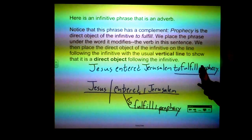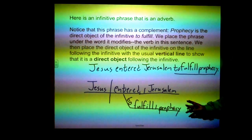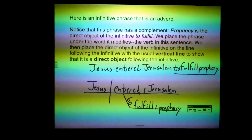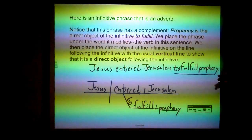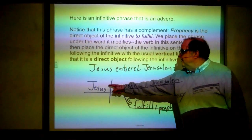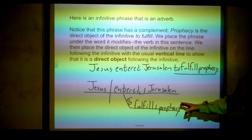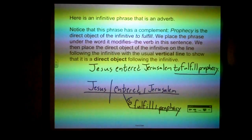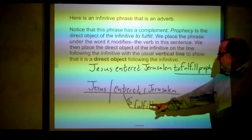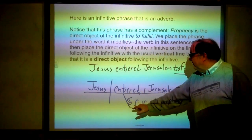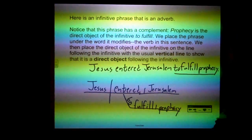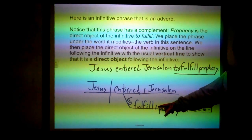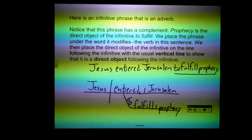Here's a trickier one — an adverb infinitive phrase: "Jesus entered Jerusalem to fulfill prophecy." "To fulfill prophecy" is the infinitive phrase. "Entered" is the verb, "Jesus" is the subject, "Jerusalem" is the direct object. "To fulfill prophecy" is an adverb phrase modifying "entered" — why did he enter? To fulfill prophecy. Again, the diagonal going down from the word it modifies has the "to," "fulfill" is on the horizontal, and "prophecy" is the direct object with a vertical line separating the verb from the direct object.